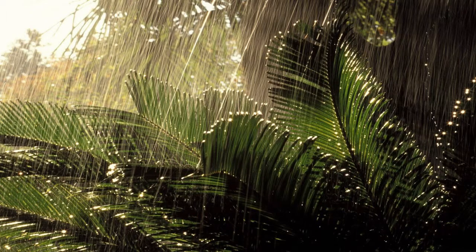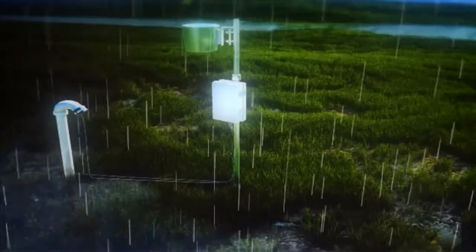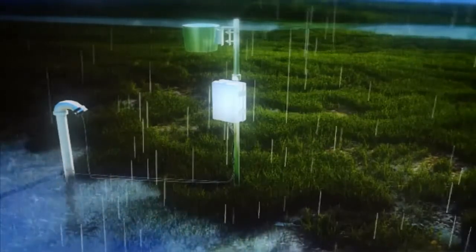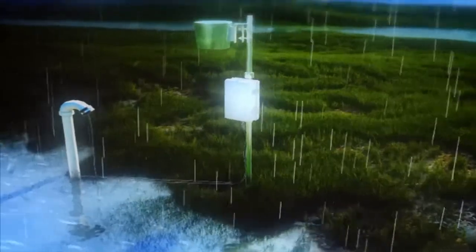Intuitively, you might think you could measure this by putting some type of collector in the ground and then emptying it to find out how much water was moving downward. This is the theory behind the pan lysimeter, but pan lysimeters don't accurately measure the amount of water moving down through the soil, and here's why.